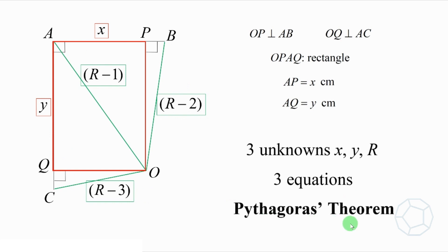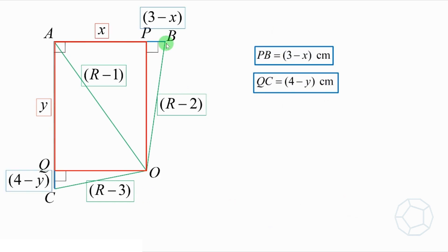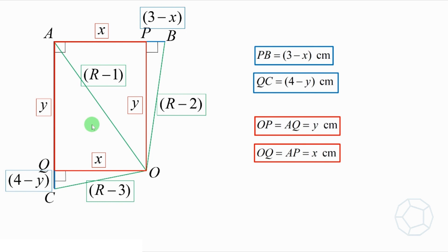Let's figure out all the lengths of the sides first. The two blue sides PB is equal to 3 minus X cm, and QC is equal to 4 minus Y cm. For the two pairs of opposite sides of the rectangle, OP is equal to AQ, which is Y cm, and OQ is equal to AP, which is X cm.